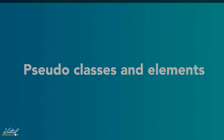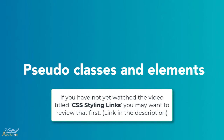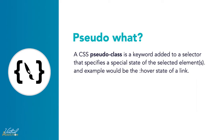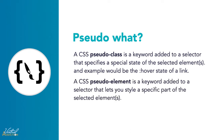Let's talk about pseudo classes and pseudo elements. I've already introduced pseudo classes — we worked with hover, active, visited, and link state on anchor elements. There are many additional pseudo classes and pseudo elements. A CSS pseudo class is a keyword added to a selector that specifies a special state of the selected element, like the hover state on a link. A CSS pseudo element is a keyword added to a selector that lets you style a specific part of the selected element, such as first-line, which can change the font on the first line of a paragraph.